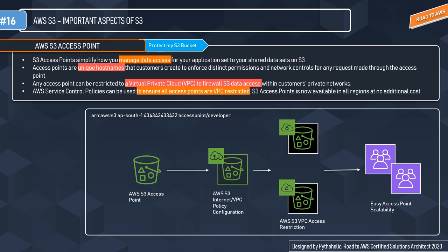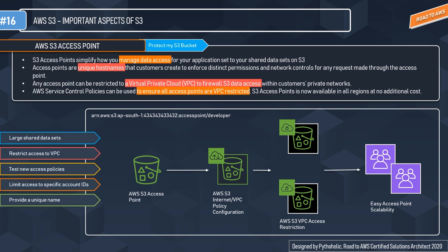Let's see when you should use S3 Access Points. The first use case is large shared datasets. If you have large datasets, with access points you can break one large bucket policy into separate access point policies for each application that needs access to the shared dataset.